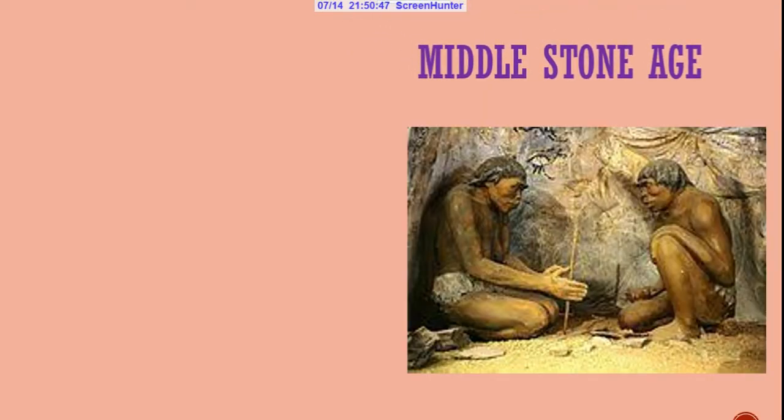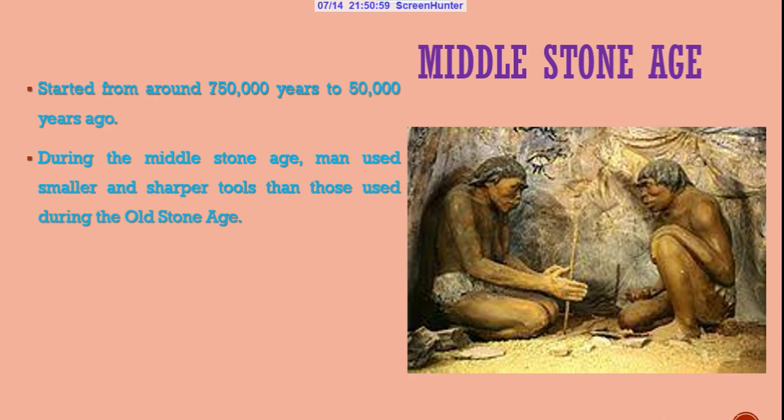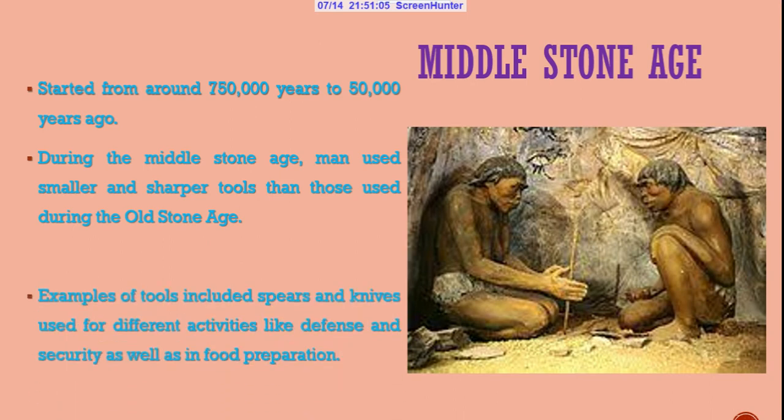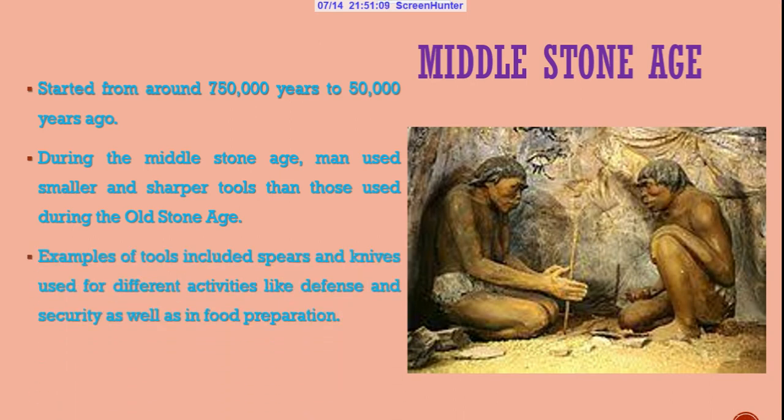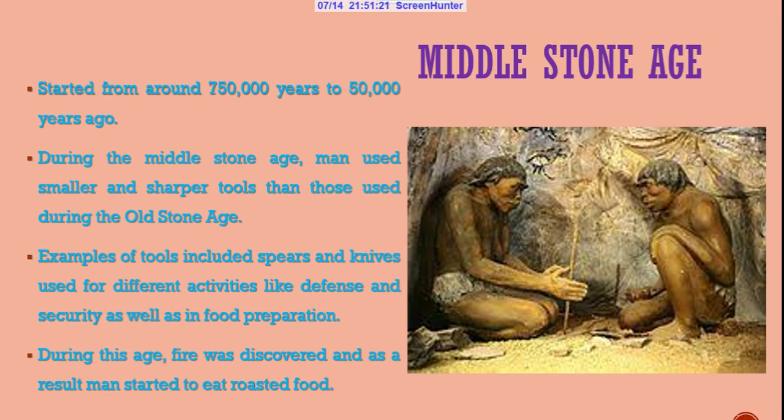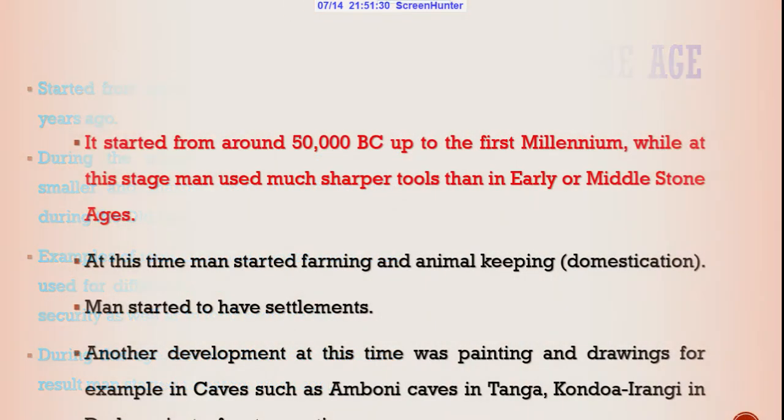The middle Stone Age lasted from 750,000 years to 50,000 years ago. During the middle Stone Age, man used smaller and sharper tools than those used during the oldest Stone Age. Examples of tools include spears and knives, which were used during different activities like defense, security, and preparation. Another remarkable development during this stage was that man discovered fire, and as a result, he started eating roasted food.